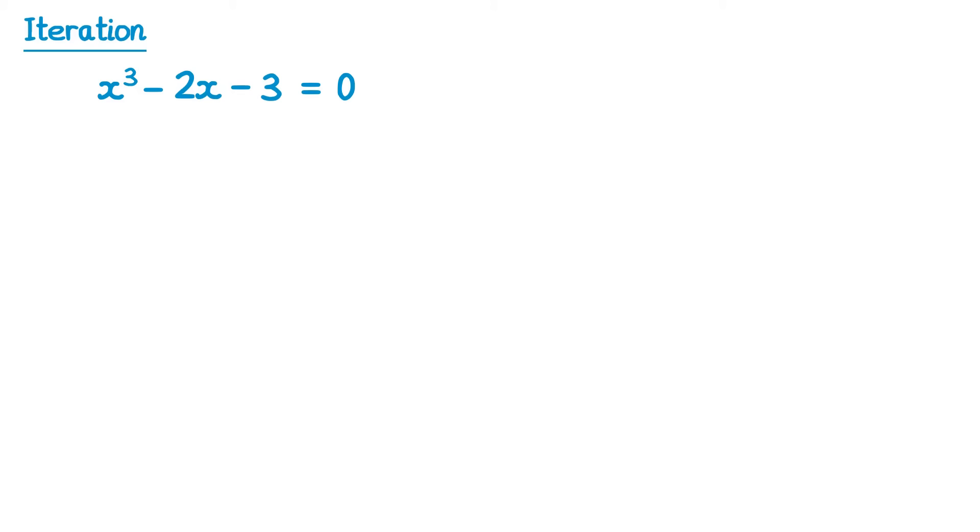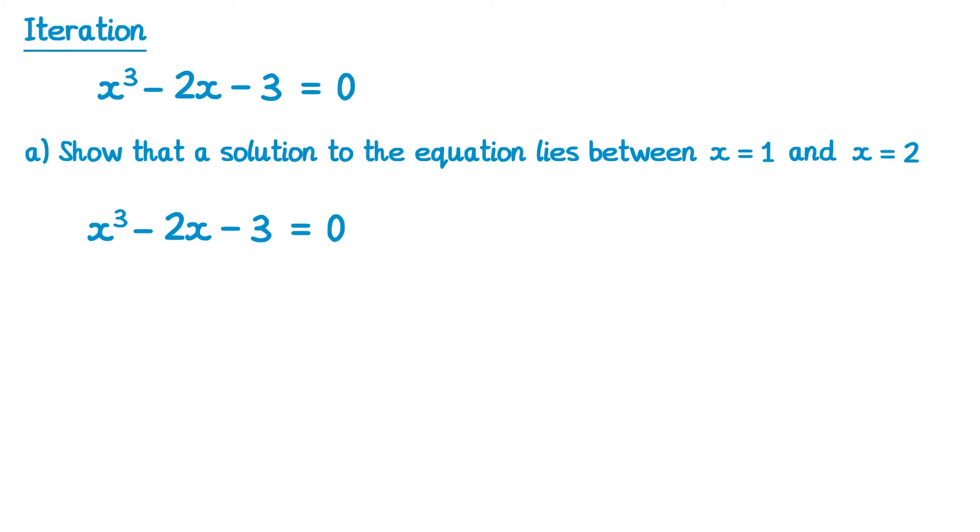A typical start to an iteration question might look something like this. Part a: show that a solution to the equation lies between x equals 1 and x equals 2. So the question's actually told us that one of the solutions is between 1 and 2. We're asked to show that this is the case though. To do this, all you do is take the equation and substitute in values x equals 1 and x equals 2.